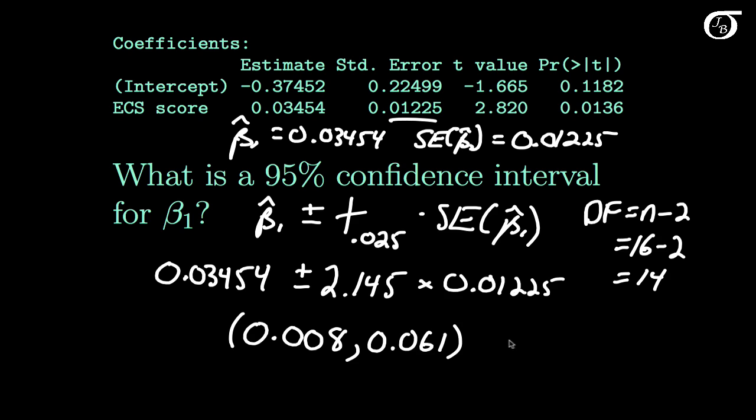We can be 95% confident that the parameter beta 1 lies within this interval. One point to note is that this interval does not contain 0, and in fact this entire interval lies to the right of 0. So this interval is giving us some evidence that beta 1 is actually greater than 0. Or in other words, we have some evidence here that as our explanatory variable x increases, our response variable y tends to increase.